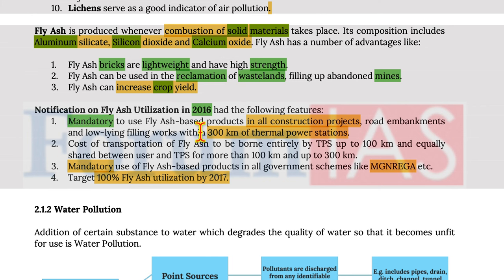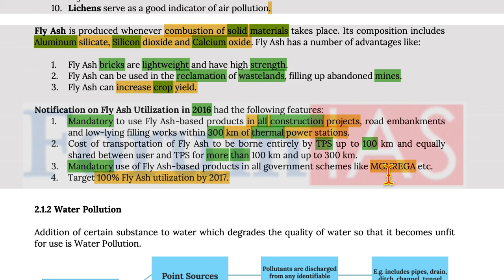The notification on fly ash utilization in 2016 had the following features: mandatory use of fly ash based products in all construction projects, road embankments and low-lying filling works within 300 km of thermal power stations. Transportation costs are borne entirely by thermal power stations up to 100 km, and equally shared between user and thermal power stations for distances between 100–300 km. Mandatory use in all government schemes like AMRUT, etc., with a target of 100% fly ash utilization by 2017.